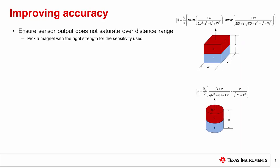For accurate results, it is important to make sure the sensor output does not saturate over the distance range. To prevent saturation, the flux density applied to the sensor must be within the sensor's linear input range. For common magnet shapes, standard closed-form expressions exist for flux density along the magnet's north-south axis, which can be leveraged for selecting a suitable magnet to avoid saturation issues.